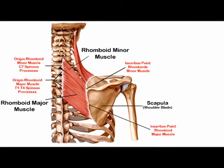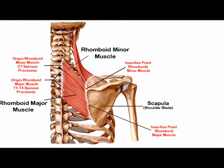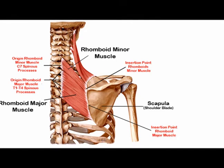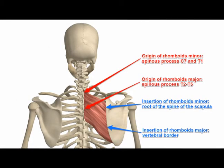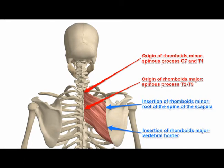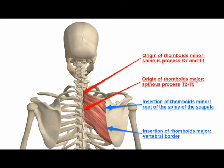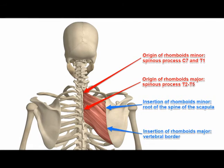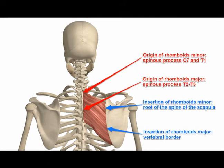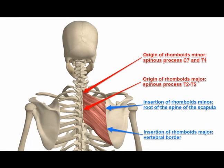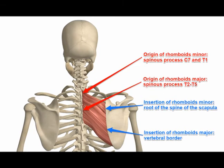Again, the rhomboid minor is superior to the rhomboid major. The rhomboid minor originates on the nuchal ligament and spinous processes C7 and T1, where the rhomboid major originates on the spinous process of thoracic vertebrae T2, T3, T4, and T5. Both muscles insert on the medial border of the scapula — the rhomboid minor adjacent to the scapular spine, and the rhomboid major just inferior to the scapular spine, all the way down to the inferior angle of the scapula.